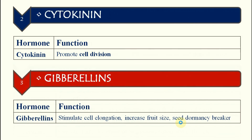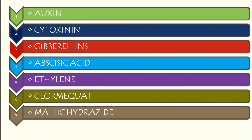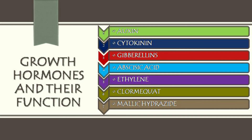So this is all about all seven hormones: auxin, cytokinin, gibberellins, abscisic acid, ethylene, chlormequat, and maleic hydrazide — with their functions discussed. If any doubt is there, you can ask in the comment box. If you want any kind of video or have suggestions to improve or cover any other topics, please suggest in the comment box. Thank you for watching, have a nice day.